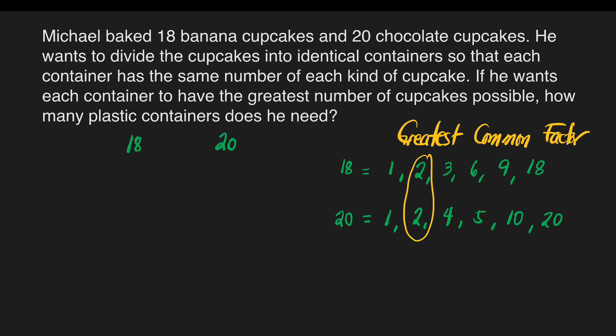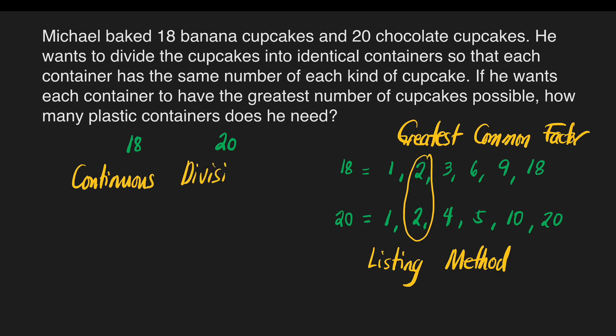We call this method the listing method. It is quite time-consuming, but I'll teach you the easiest way to find the greatest common factor. The method I am talking about is the continuous division.